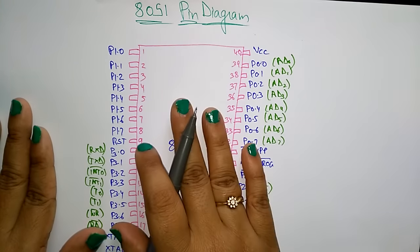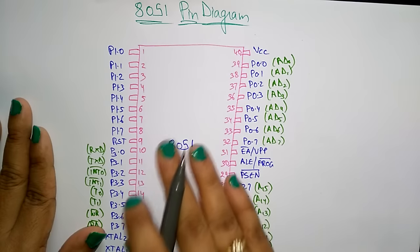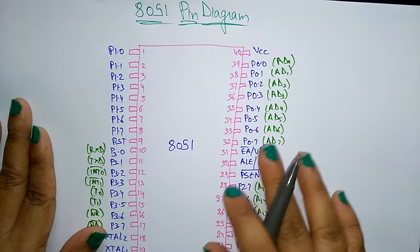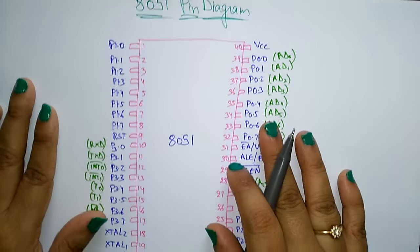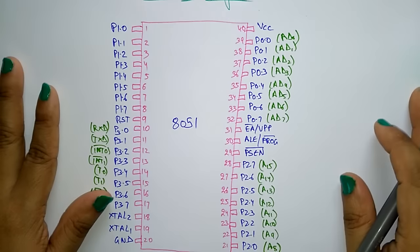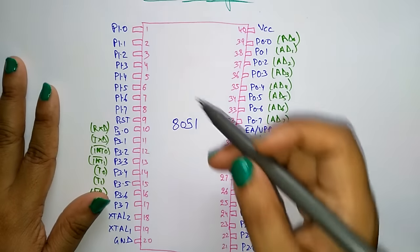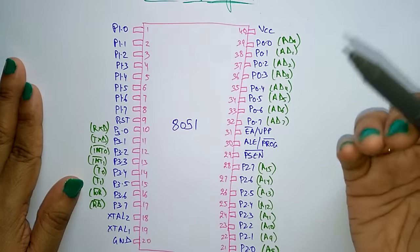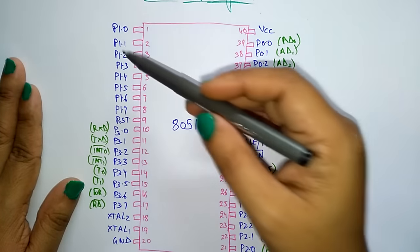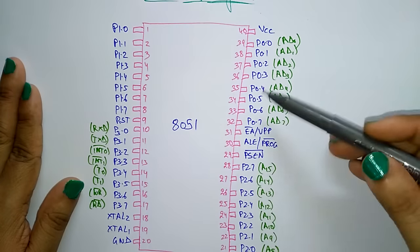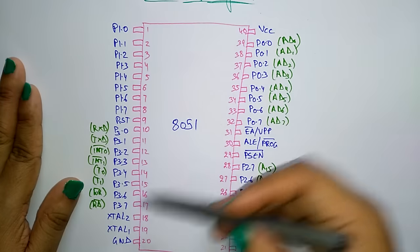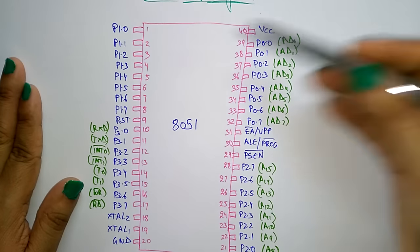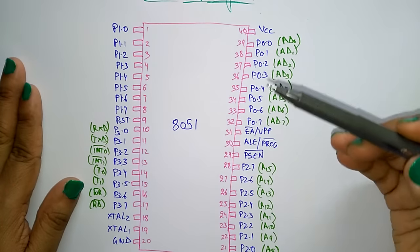Now let us look at this 8051 microcontroller. It is a 40-pin DIP. Here you can see three ports: port 1, port 2, port 3 and port 0. So total 4 ports are present.